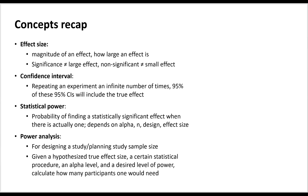Statistical power is the probability of finding a statistically significant effect when there is actually an effect — so the actual effect size is not zero. It depends on multiple factors including alpha, our criterion for statistical significance, which is typically set at 0.05. It depends on how many people we have in our experiment — the more we have, the higher power we obtain. It depends on our study design: normally a between-subjects design would have lower power than a within-subjects design for investigating the same effect. And finally, we have higher power for larger effect sizes, other things being equal.